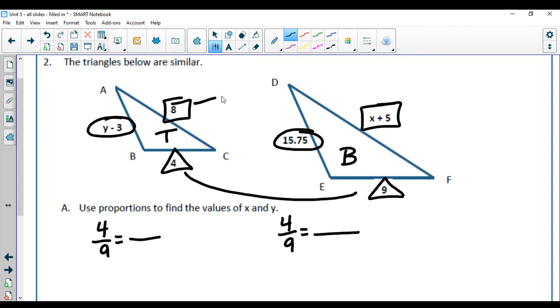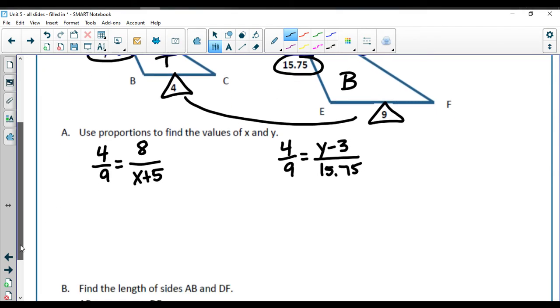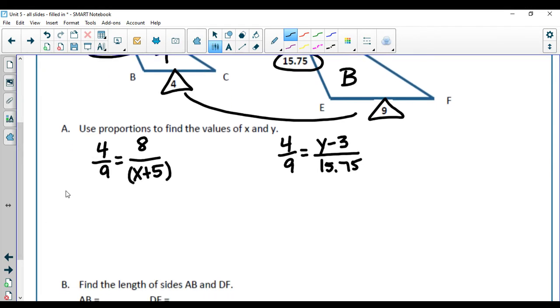The one with x is right here on my boxes, so I'm going to do 8 over x plus 5. And the y's are the circled ones, so my top is y minus 3 and my bottom is 15.75. I'm going to put my expression in parentheses, so I have 4 times x plus 5, and 9 times 8 is 72. Since this is a plain number, I get x plus 5 equals 18. Subtract away my 5 on both sides, and I get x equals 13.